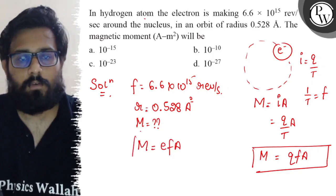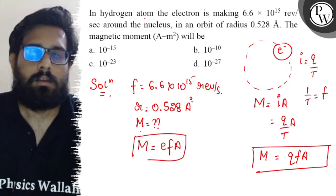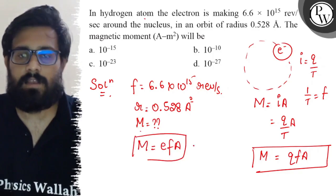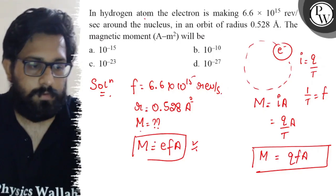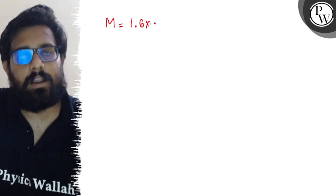For electron, magnetic moment can be written as e × f × A. For electron, q equals e, so e × f × A is the magnetic moment.